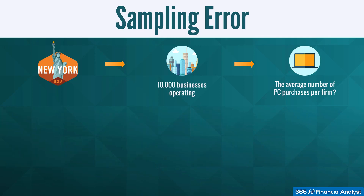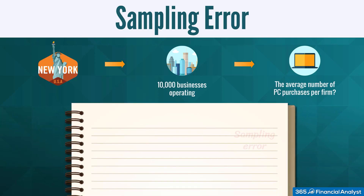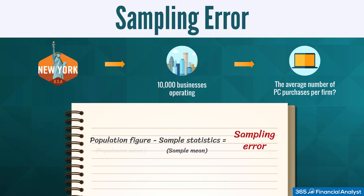Such deviation is called a sampling error. By definition, the sampling error is the difference between the observed value of a statistic and the quantity it is intended to estimate. For example, any difference between the sample mean and the population mean is a sampling error.